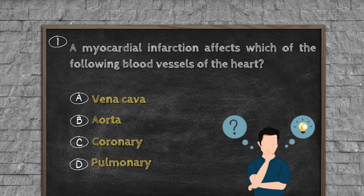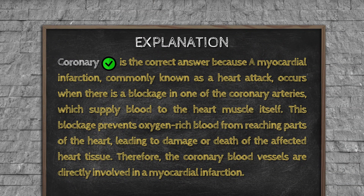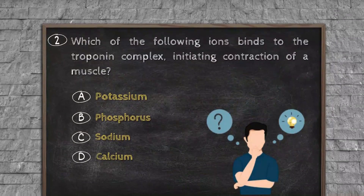Question number one. A myocardial infarction affects which of the following blood vessels of the heart? Option A, Vena Cava. Option B, Aorta. Option C, Coronary. Option D, Pulmonary. Explanation: Coronary is the correct answer because a myocardial infarction, commonly known as a heart attack, occurs when there is a blockage in one of the coronary arteries, which supply blood to the heart muscle itself. This blockage prevents oxygen-rich blood from reaching parts of the heart, leading to damage or death of the affected heart tissue. Therefore, the coronary blood vessels are directly involved in a myocardial infarction.